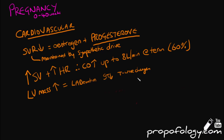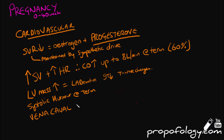A systolic murmur is nearly universal at term, but you must always remember that a diastolic murmur is not normal. Another really important fact is that the gravid uterus causes vena caval compression, which is why pregnant ladies find it hard to lie supine. This reduces venous return and preload to the heart.